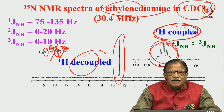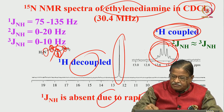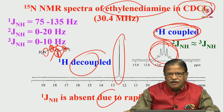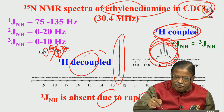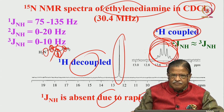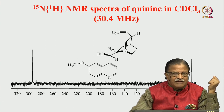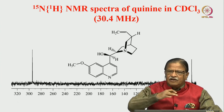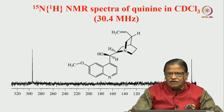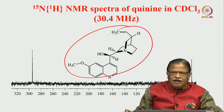You might ask what happened to the one-bond coupling. The one-bond coupling is absent due to rapid exchange — we do not see it here. We see only the two-bond and three-bond couplings, which are approximately equal. As a consequence, the nitrogen-15 proton-coupled spectrum is a quintet for this molecule. Nitrogen-15 NMR spectra are generally very simple because a small organic molecule will have only a few nitrogens — two or three — unless you go to a large protein.